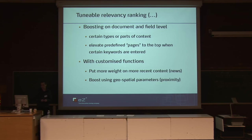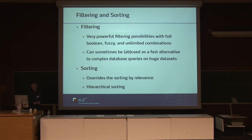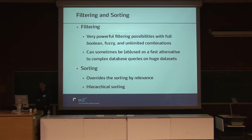Other uses are boosting on geospatial parameters, like proximity searches. If you want to find a restaurant that offers a nice lobster preparation, you can search for it and ensure it's not too far away from you, if your application is designed for that. Filtering and sorting is incredibly powerful — it provides fuzzy, boolean, and all kinds of combinations, and it can even be used to speed up queries on databases.